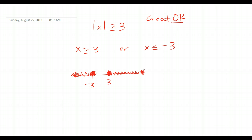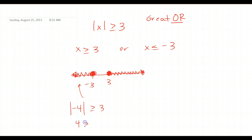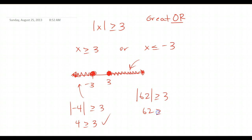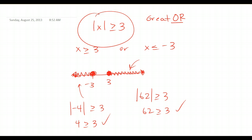If you want to test values: pick negative 4 and plug into the original — is the absolute value of negative 4 greater than or equal to 3? Yes, it checks out. Pick 62 — is the absolute value of 62 greater than or equal to 3? That also checks out. If you're unsure, always test a number inside your shaded portion back in the original, and you'll know you're correct.